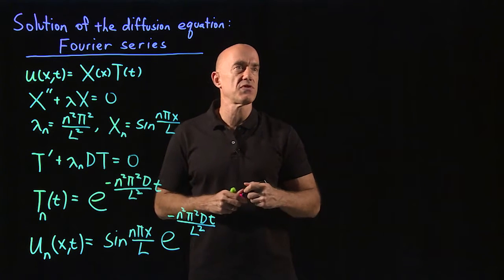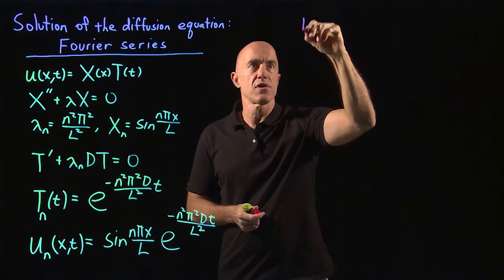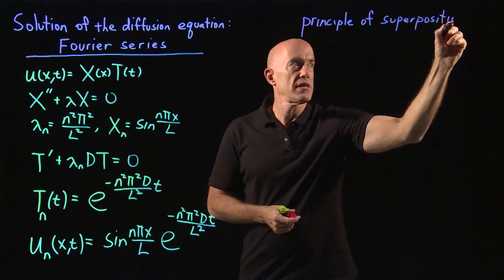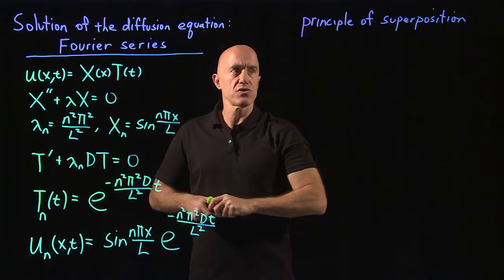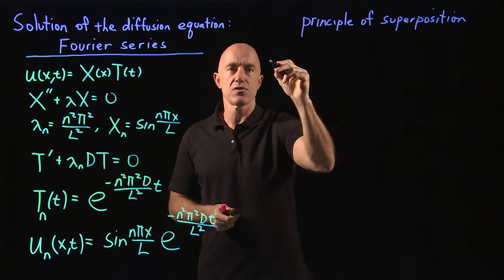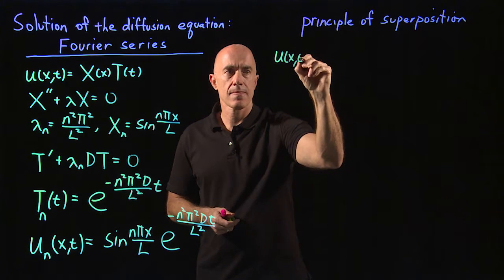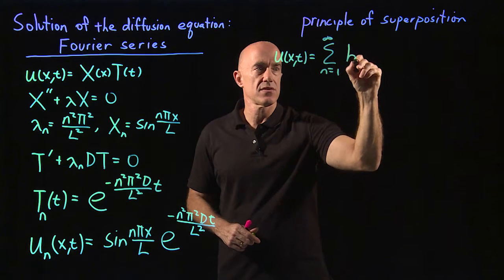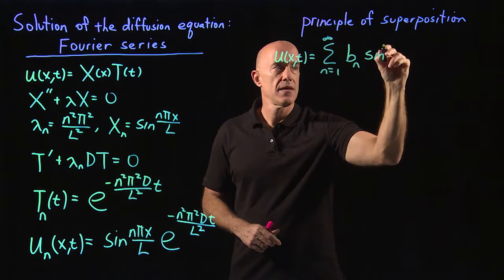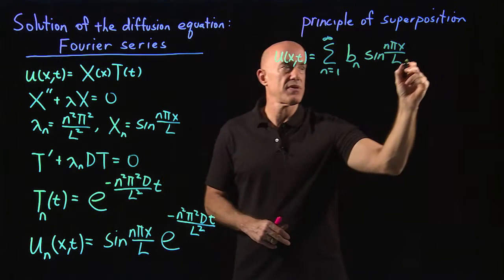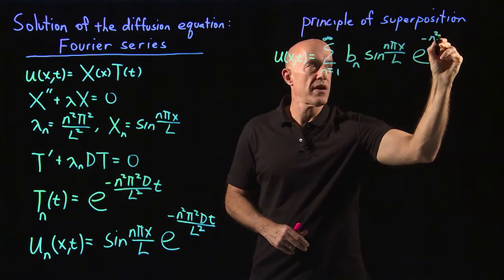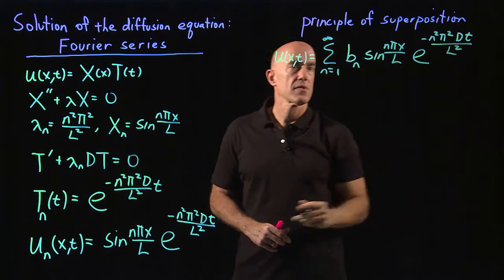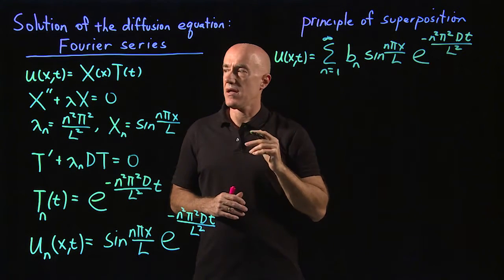Final step: the principle of superposition. We apply the principle of superposition, which is valid for linear homogeneous differential equations, to obtain the general solution. The general solution for u is u(x,t) equals the sum from n equals 1 to infinity of b sub n times sine(n*pi*x/L) times e to the minus n squared pi squared D t divided by L squared. That's our general solution for the concentration u.